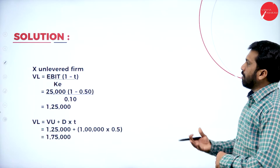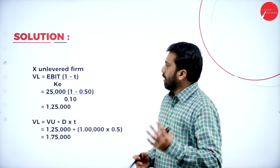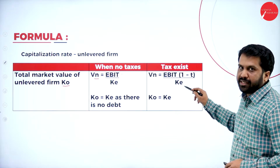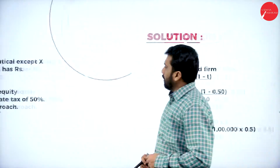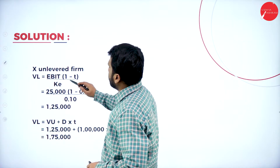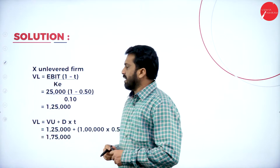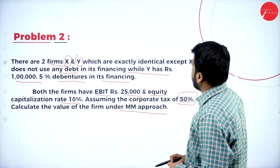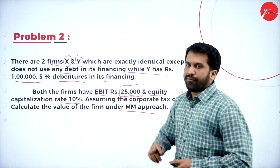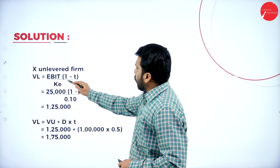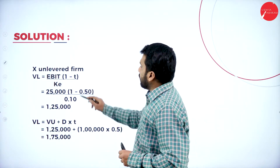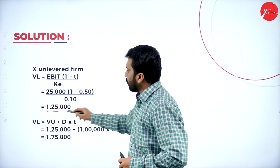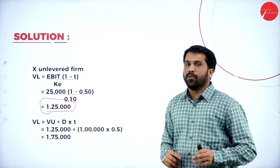Since the tax rate is 50%, we use (1 − tax) in the formula. For the unlevered firm (X): VU = EBIT × (1 − T) ÷ KE = 25,000 × (1 − 0.5) ÷ 0.10 = 25,000 × 0.5 ÷ 0.10 = Rs. 1,25,000.